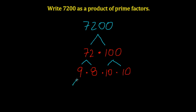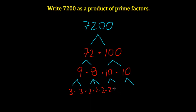9, 8, 10, and 10 are all composite numbers still. So I can break the 9 down, break the 8 down, and break both 10s down. 9 can be broken down into 3 times 3, and both of those numbers are now prime. The 8 can be written as 2 times 2 times 2. The first 10 can be written as 2 times 5, and the last 10 can also be written as 2 times 5. Now when you look at the numbers, I just have 3s, 2s, and 5s — all prime.